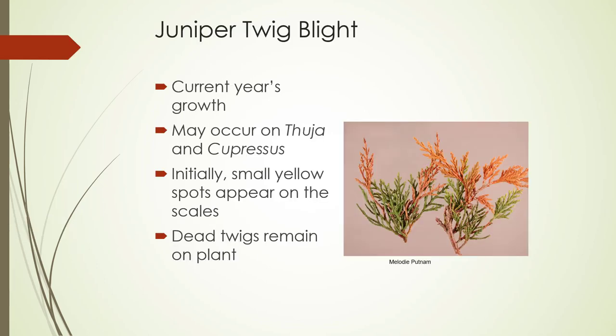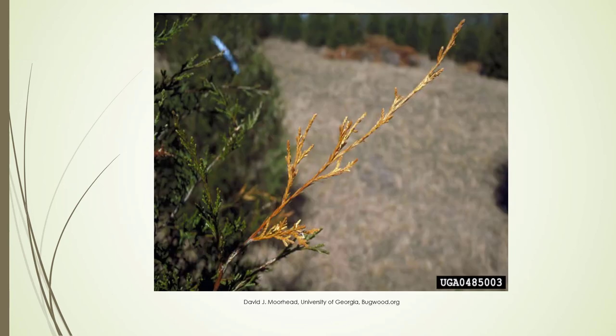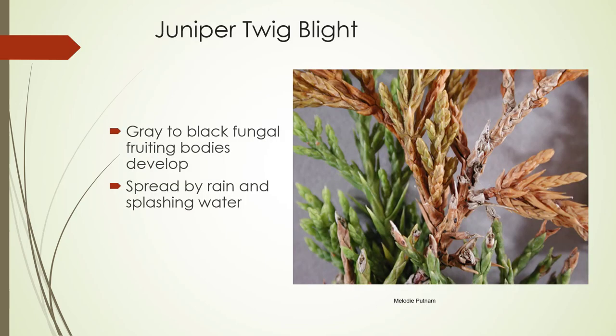One of the diseases you'll find in this group is juniper twig blight. It happens on the current year's growth and may occur on Thuja and Capresis. Initially you get small yellow spots that appear on the scales, and then dead twigs remain on the plant. Close up, you're going to see gray to black fungal fruiting bodies developing, and it is spread by rain and splashing water.